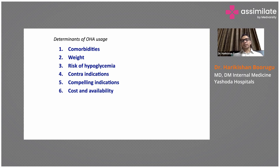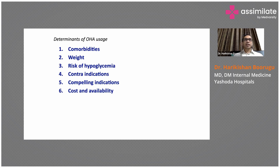Another scenario: a 50-year-old patient with heart failure and poor LV function, on diuretics and cardiac medications, who develops type 2 diabetes. In this case, my choice of drug would be an SGLT-2 inhibitor, because SGLT-2 inhibitors do not cause hypoglycemia and are useful in patients with heart failure — not just for bringing sugars down but also in management of heart failure.